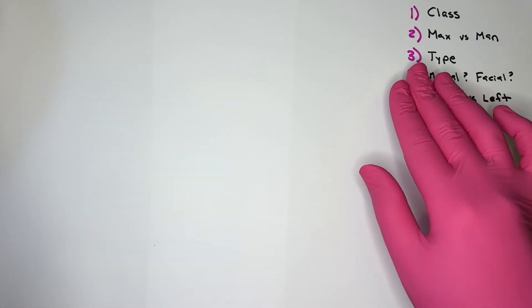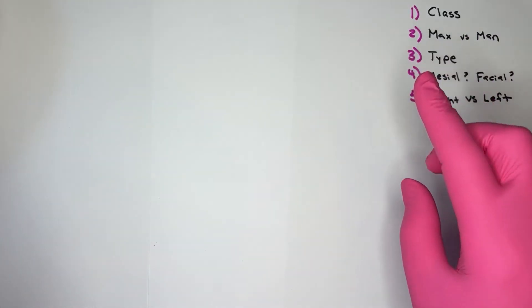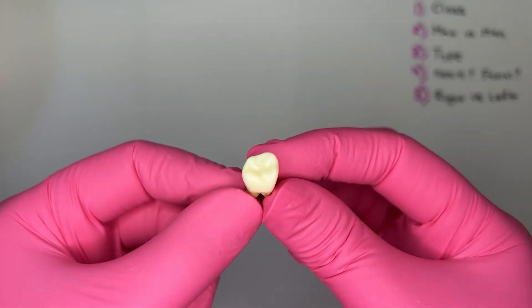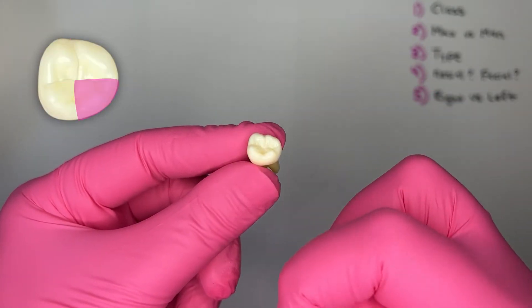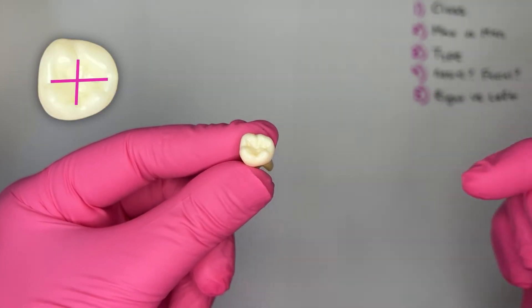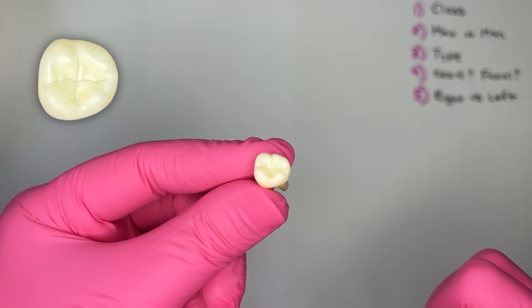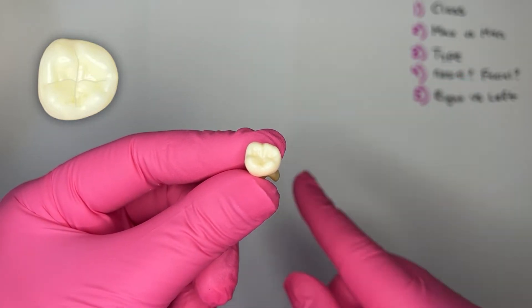Step three, is it a mandibular first or second molar? To determine that, I look at the occlusal anatomy. The occlusal anatomy has four cusps, and the grooves are in the shape of a plus sign. That's the occlusal anatomy of the mandibular second molar.